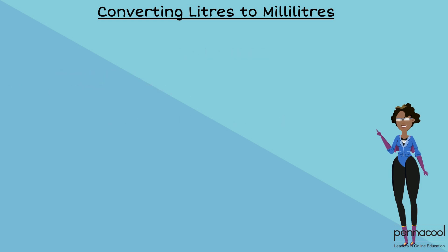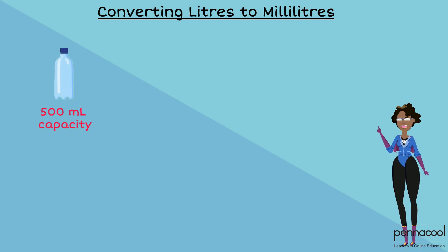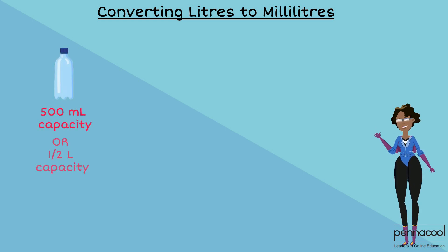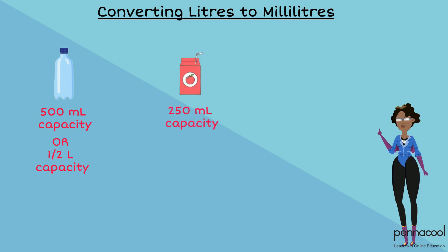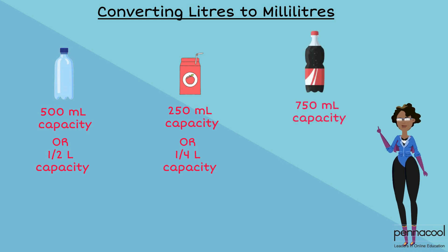Certain values in terms of milliliters can be represented as a fraction of a liter. 500 milliliters is exactly half of a liter. 250 milliliters is exactly one quarter of a liter. And 750 milliliters is exactly three quarters of a liter.